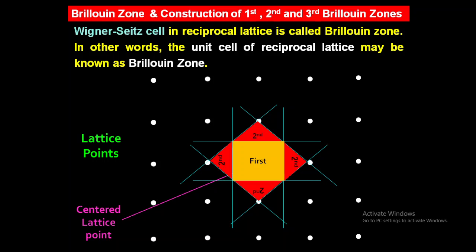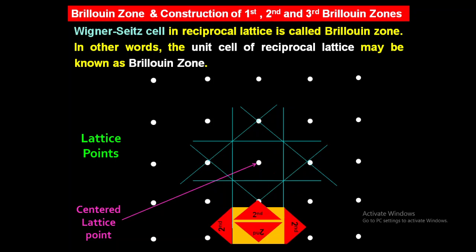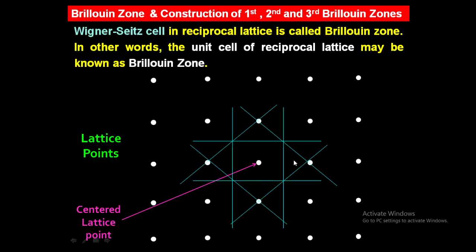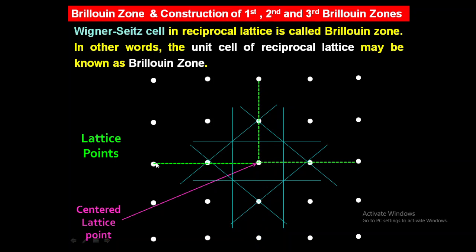The question is how to construct the third Brillouin zone. For constructing the third Brillouin zone, we have to connect two nearby lattice points from the origin — that is, both the nearest neighbor and the next nearest neighbor. In the right direction these are two nearby lattice points; in the left direction these are two lattice points; in the upward direction these are two nearby lattice points; in the downward direction these are two nearby lattice points. So we are considering the neighbor and next nearest neighbor. Then we have to draw perpendicular bisectors to these green dashed lines.